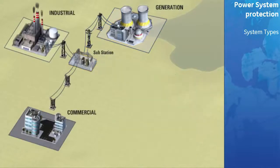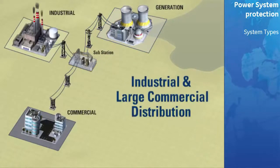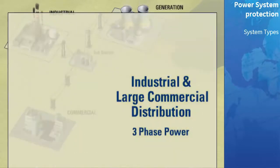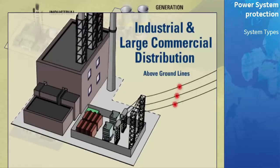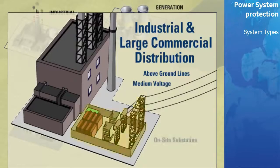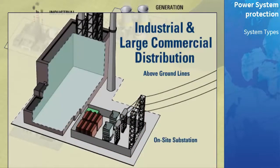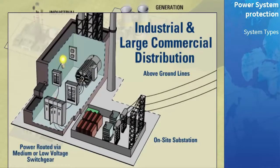The distribution system for a typical industrial or commercial user shares some similarities to that of the residential customer, with the major exception that the power being delivered is usually three-phase. From the substation, the industrial or commercial power lines take the power above or below ground to a large transformer, which steps the three-phase voltage down to a suitable level for the plant or building. For larger commercial or industrial users, this voltage may be in the medium voltage range, in which case there will be an additional substation on site. The power would then be routed from the transformer or transformers via medium or low voltage switchgear to different areas of the plant or building for further distribution via switchboards and panel boards.